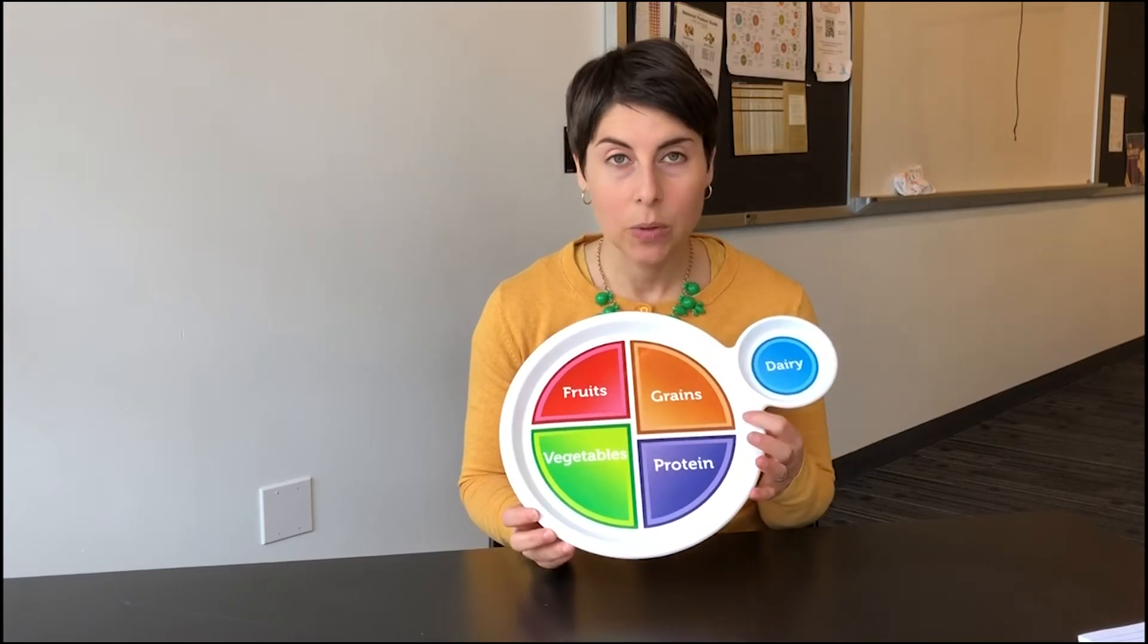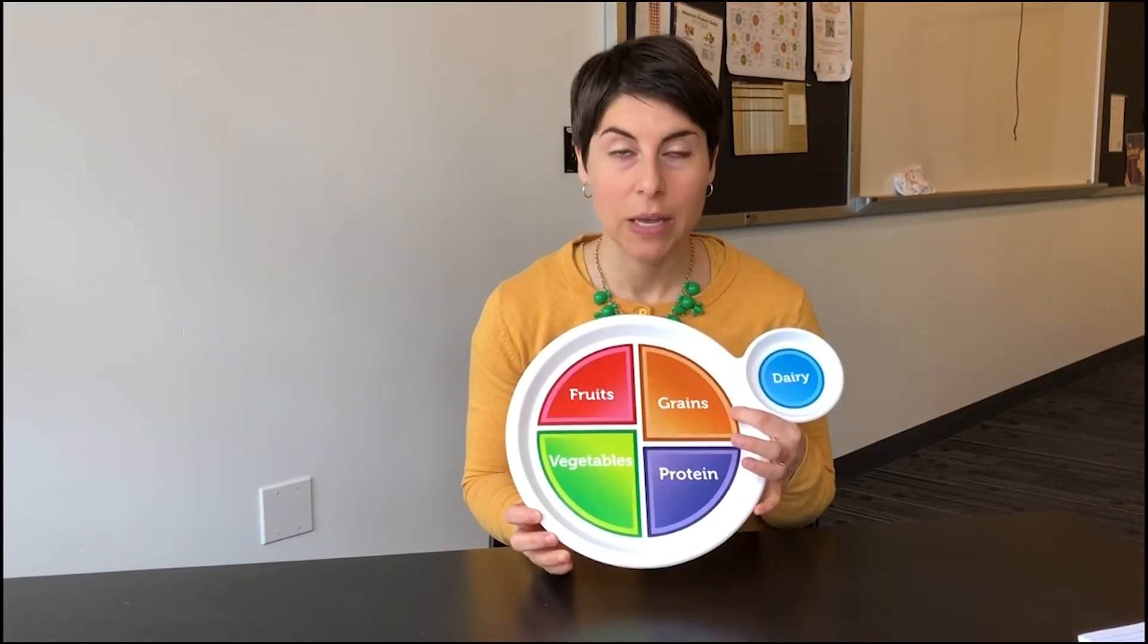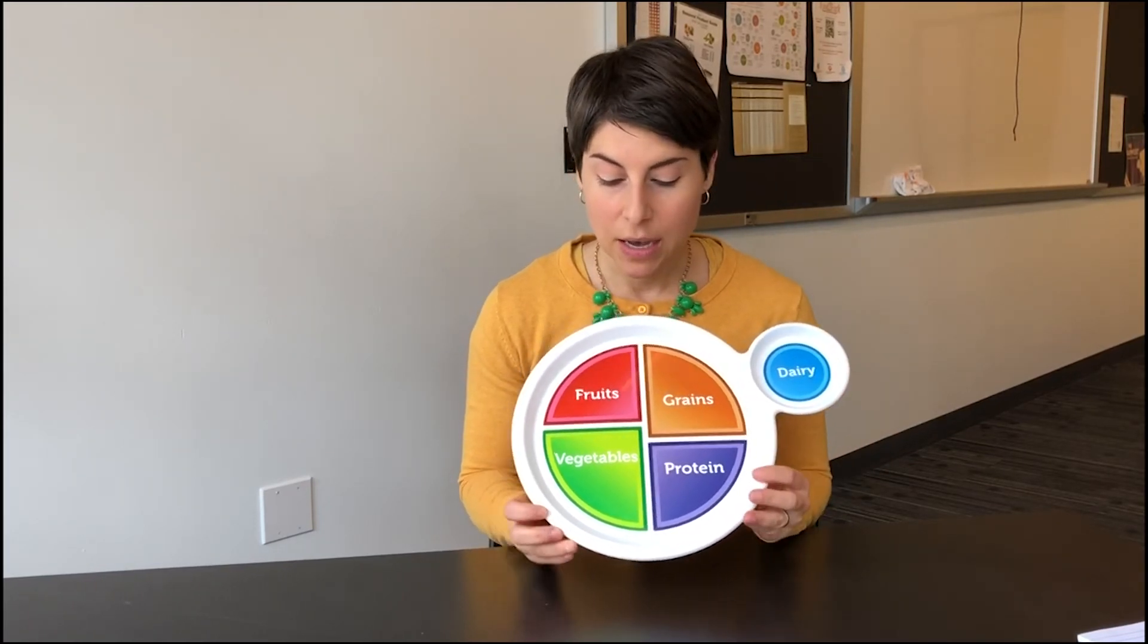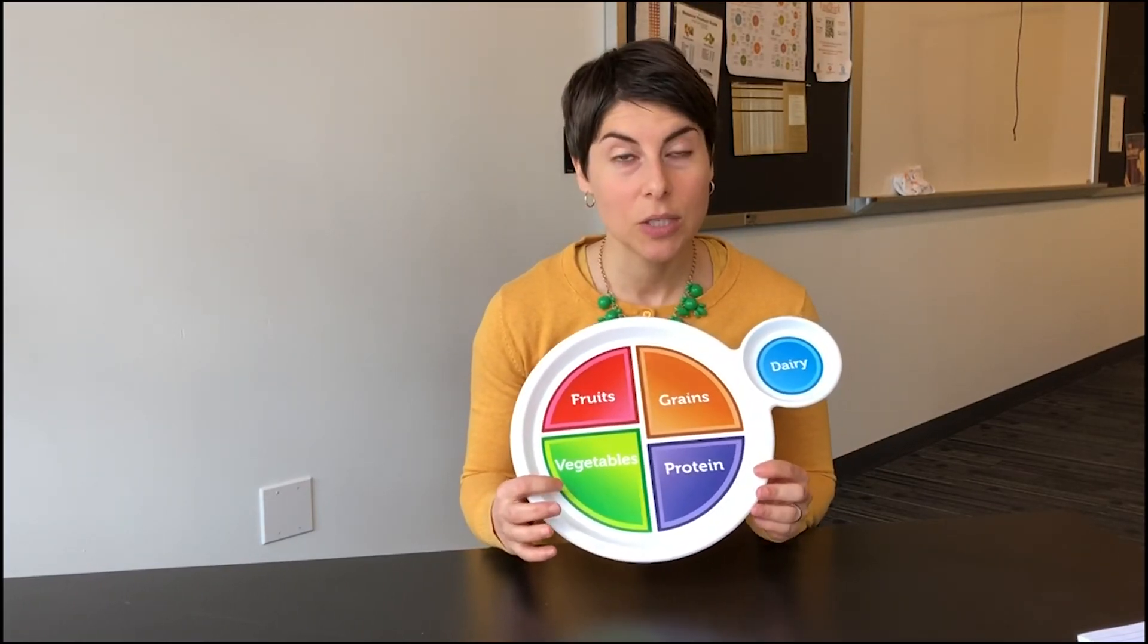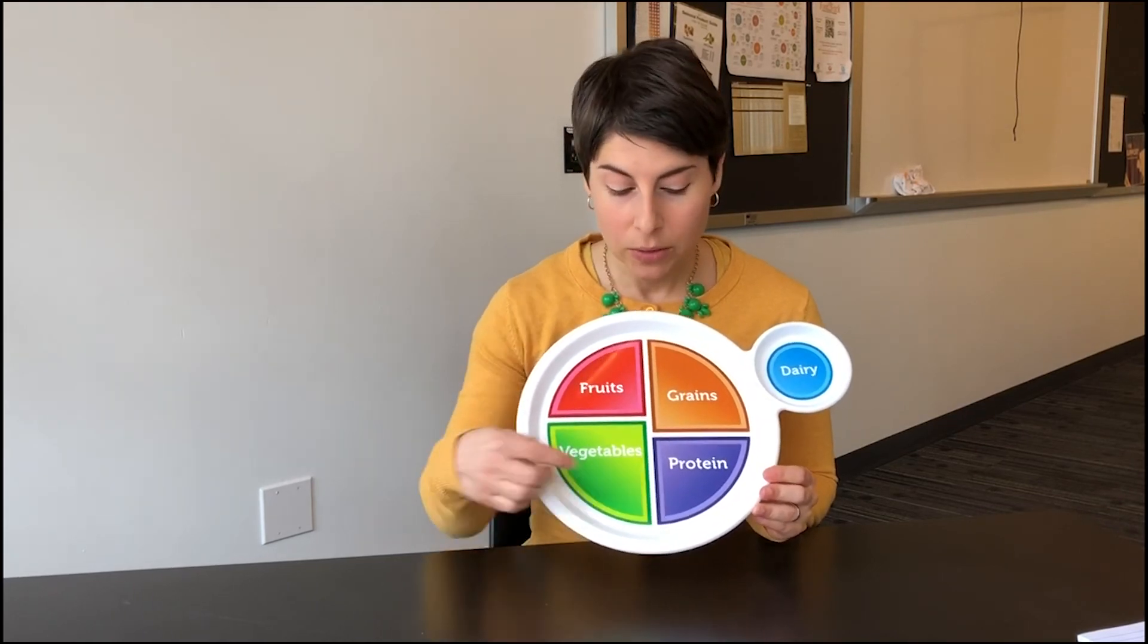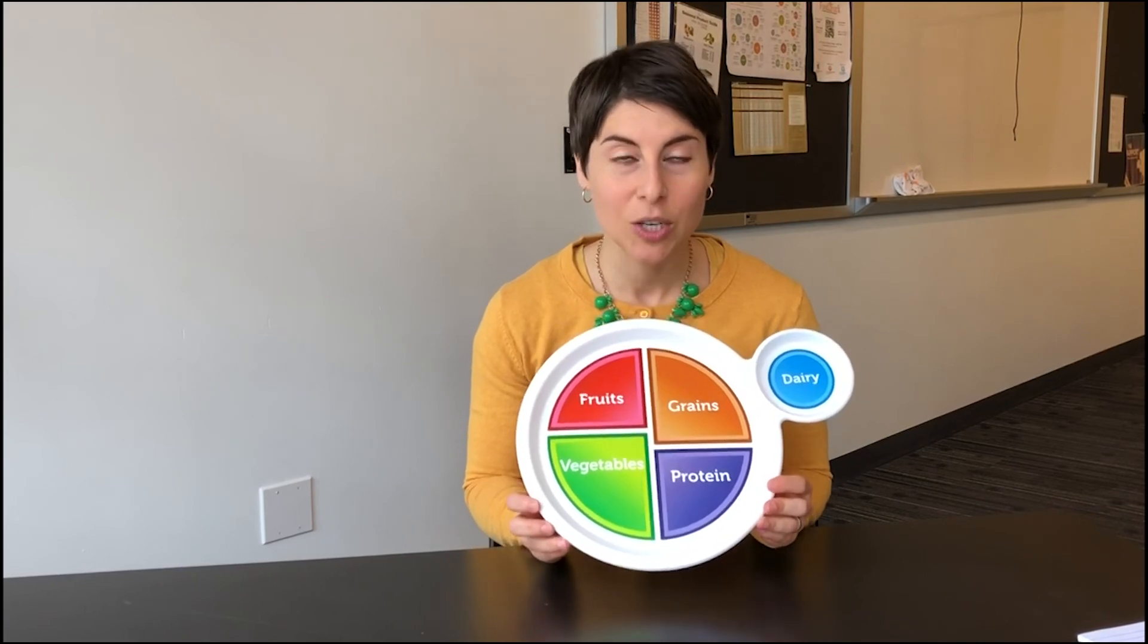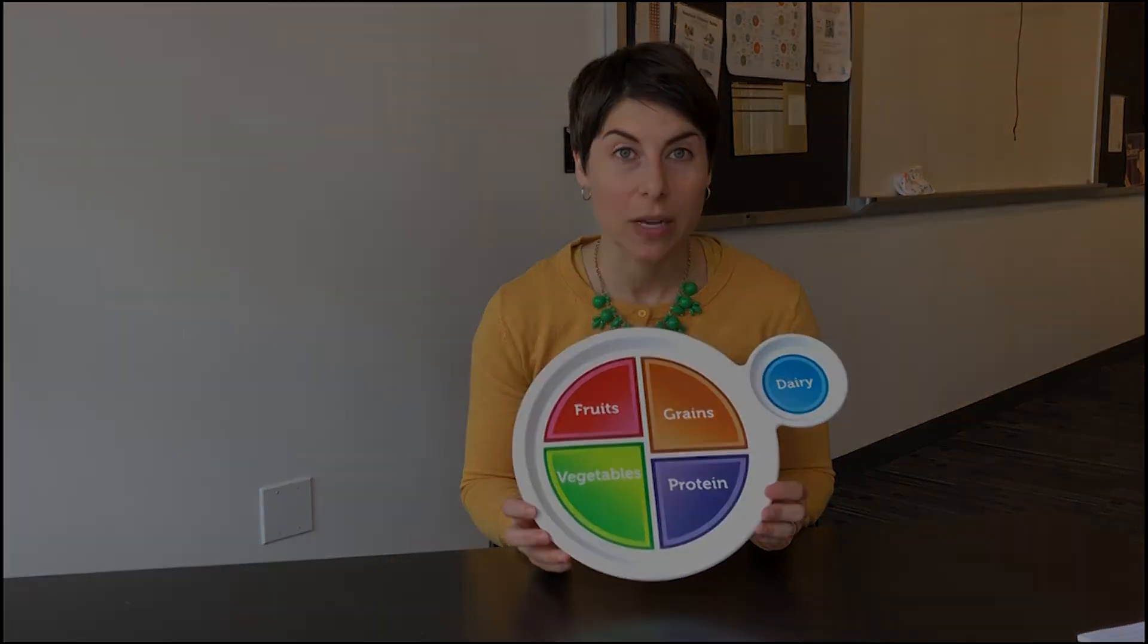So for example, pizza has crust, which is made of wheat, which is a grain. There's some dairy from the cheese. There's the tomato sauce, which kind of counts as a vegetable, but you'll notice that there's some categories missing. So we'll talk about how to fit those categories onto your plate, whether you're at home or at a restaurant.